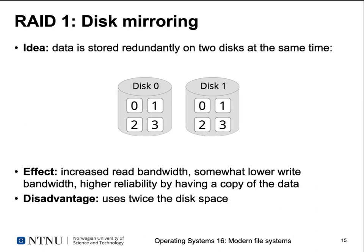RAID 1 is disk mirroring: data is stored redundantly on two disks simultaneously. This provides increased read bandwidth — block 0 can be read from disk 0 while block 1 is read from disk 1 — but somewhat lower write bandwidth since every write must go to both disks. The advantage is higher reliability: when one disk fails, all data is still available on the other. The disadvantage is cost — it uses twice the disk space.